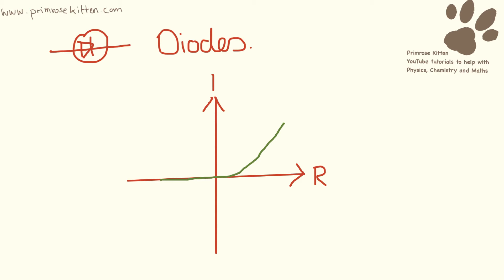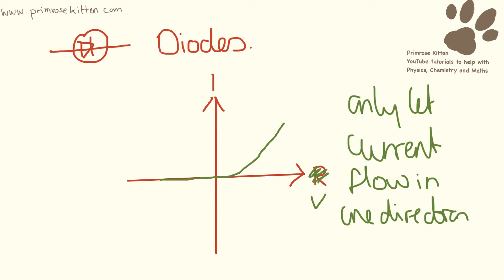Now diodes will only let current flow in one direction, which is why the current potential difference graph looks like this. That should not be an R, that should be a V - current potential difference graphs. So over this side, there's no current being let through, so nothing happens. And then once the current is being let through, the potential difference increases.